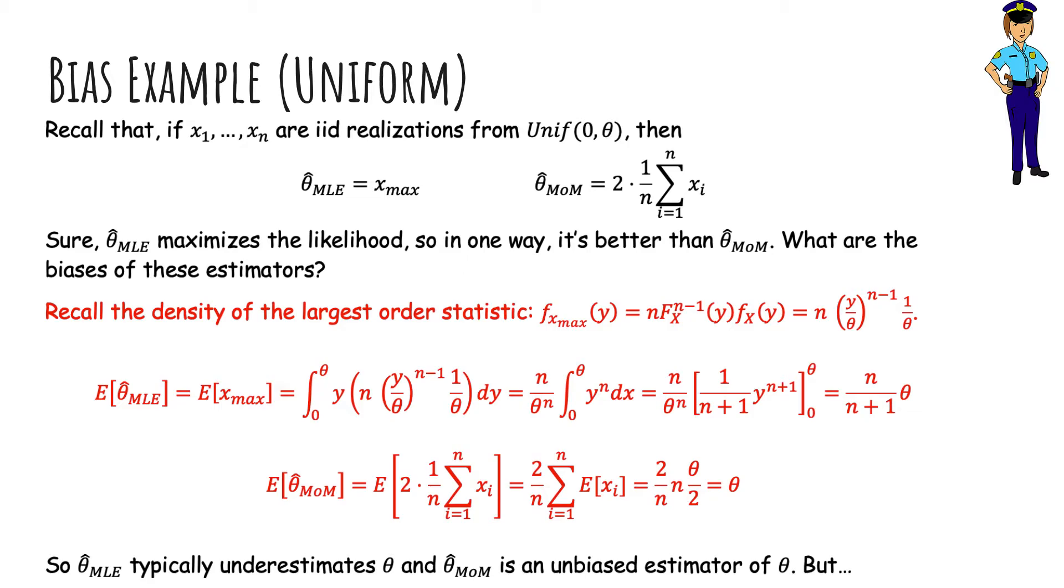And so you could actually think of correcting this estimate by multiplying by n plus one over n to get rid of this thing. So you might, it won't be the maximum likelihood estimate, but you could come up with a new estimate, which is n plus one over n times x max. And so that your coefficients would cancel, and you would get an unbiased estimate. So here, method of moments is better because it's unbiased.